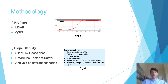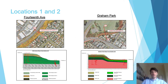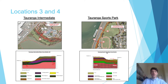Some of the locations that were investigated include 14th Avenue and Graham Park. In the upper figure you can see the location of the cross section, and the lower figure shows the soil profile, which has been created using the geotechnical data from the New Zealand Geotechnical Database. Locations 3 and 4 are Tauranga Intermediate and Tauranga Sports Park.